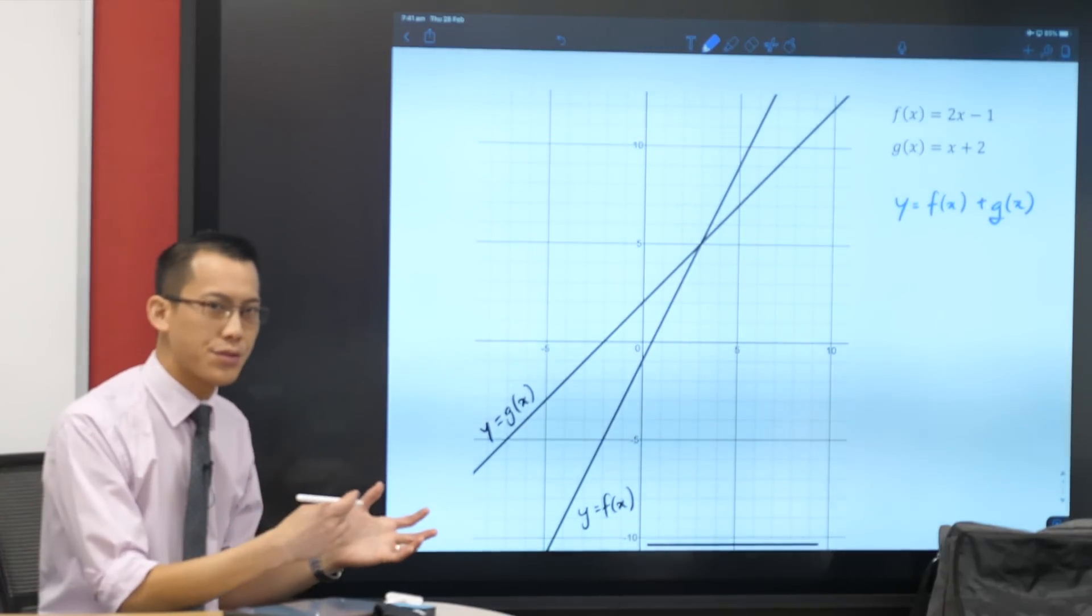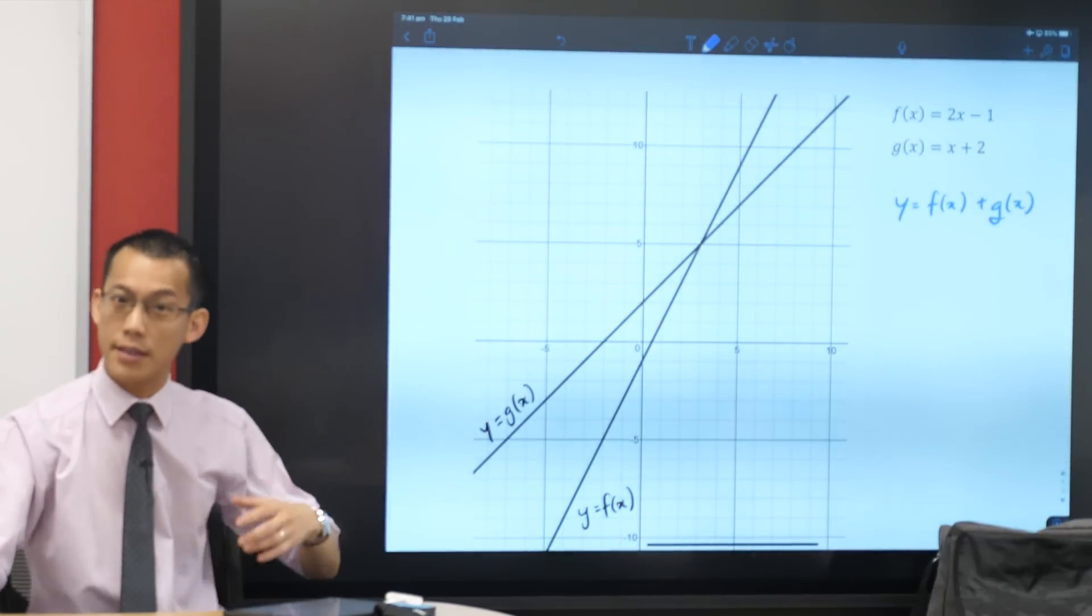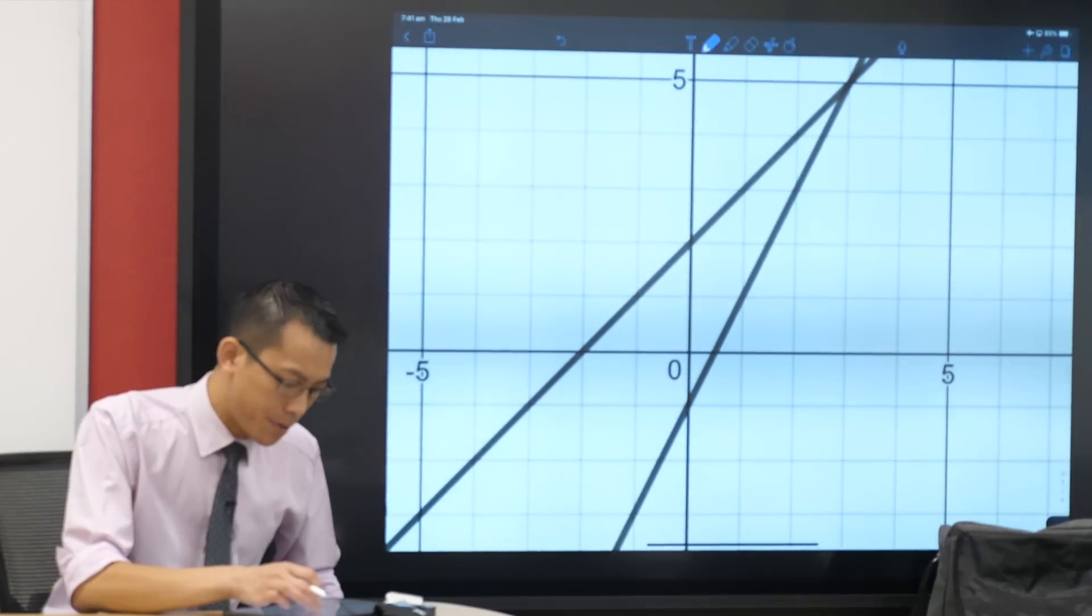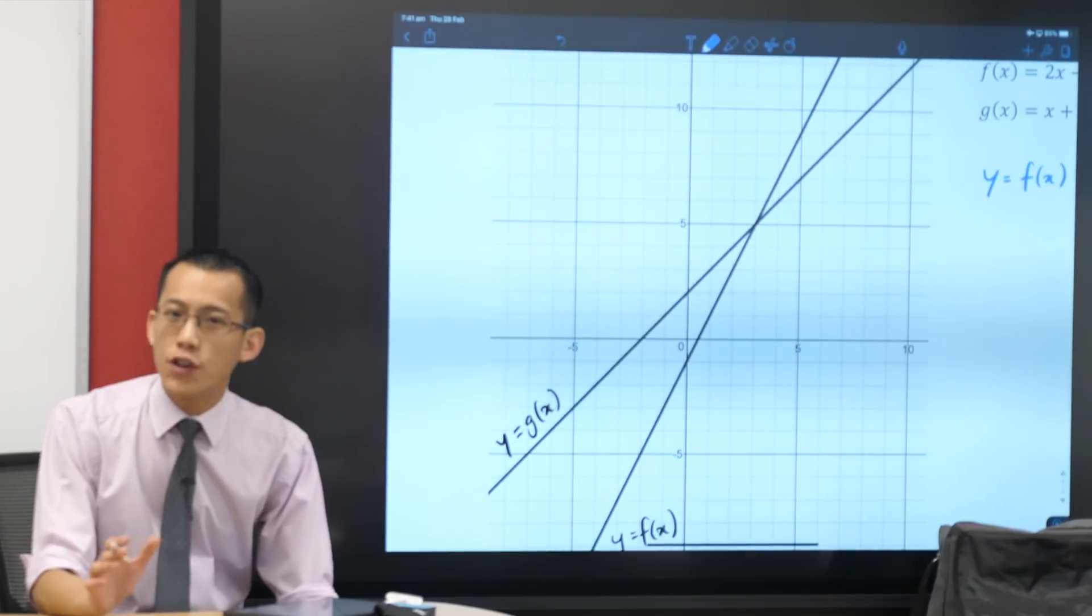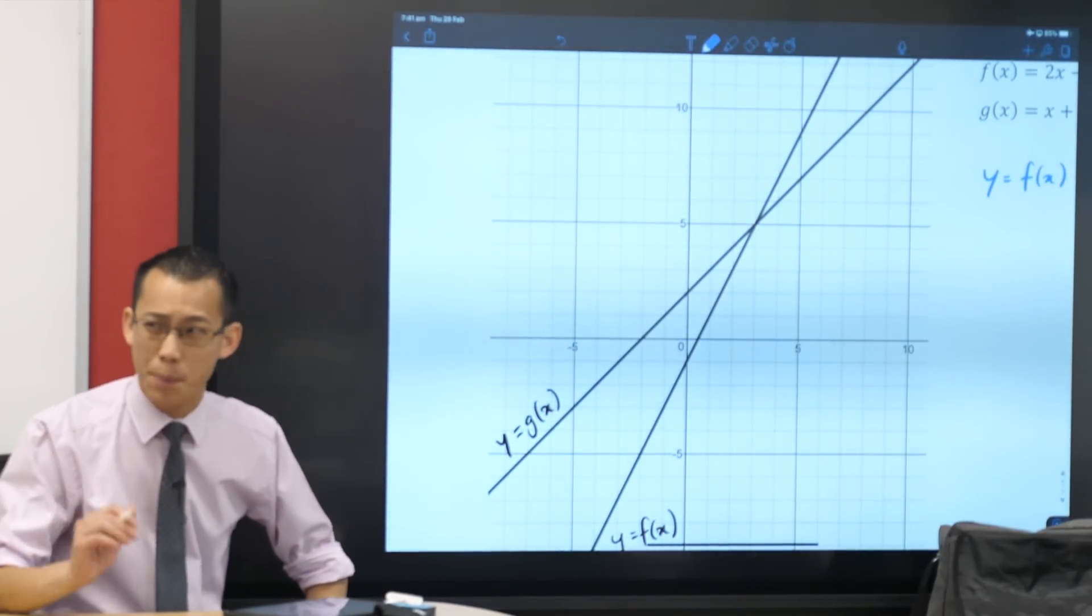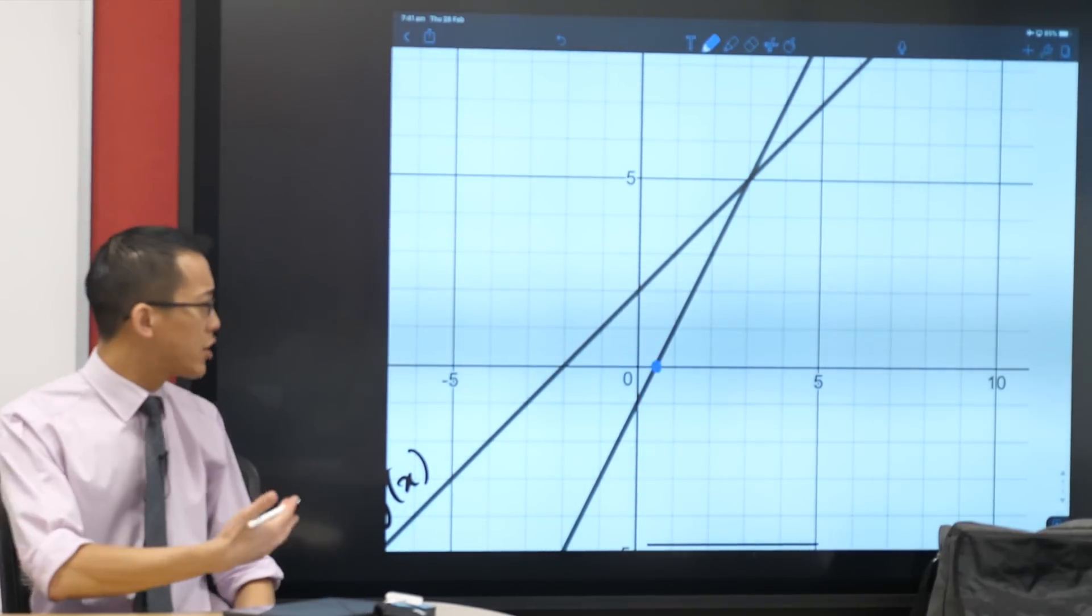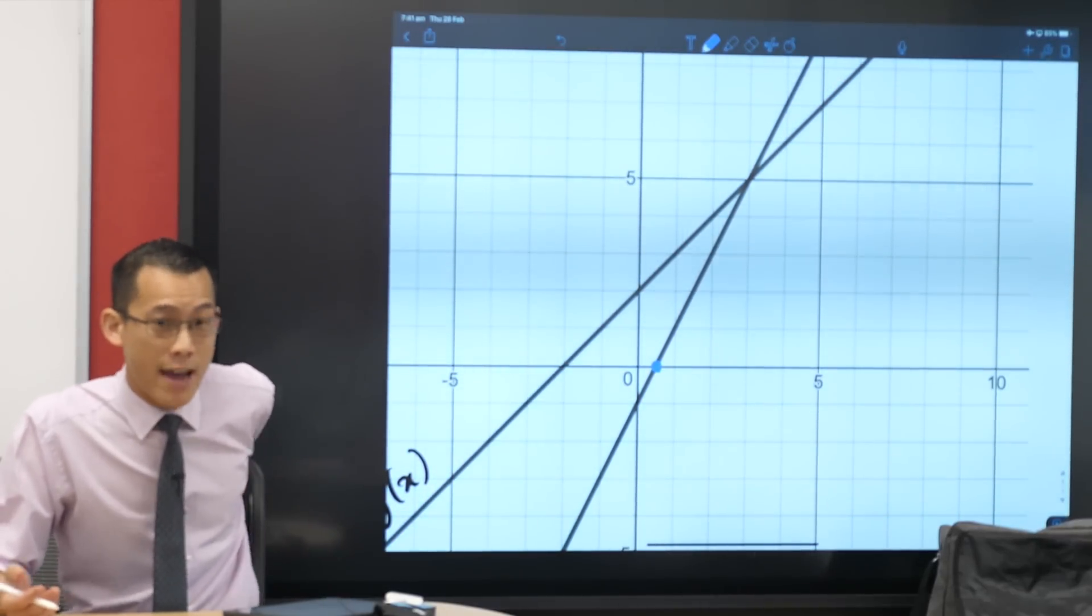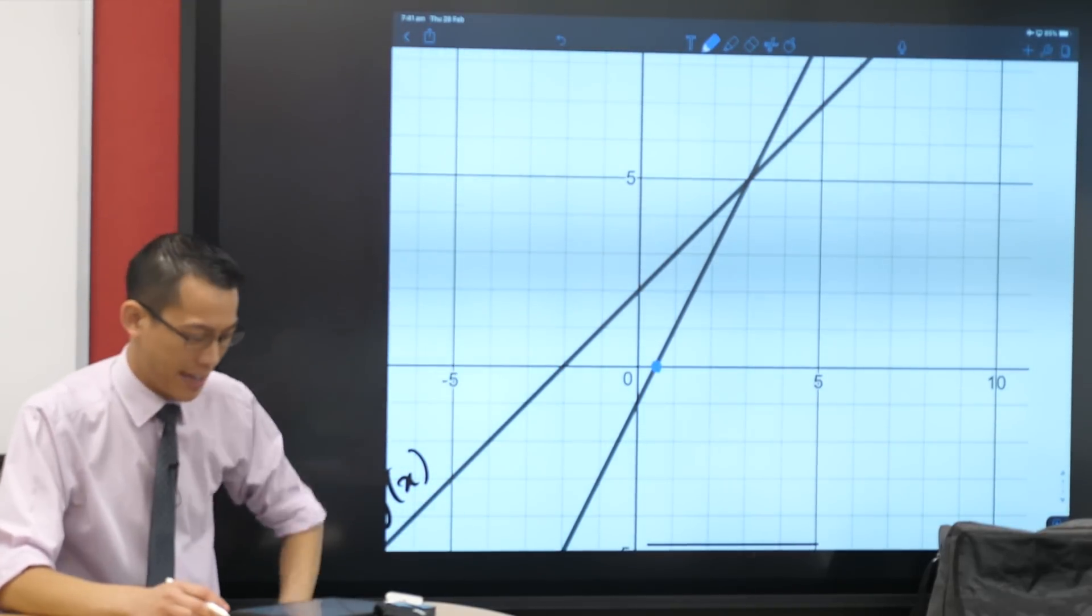But what I want to push your mind into thinking about is what if you didn't know? What if you put them together algebraically, like, I don't know what this looks like. Can we use these graphs to help us? And the answer is yes. So here's what f and g look like. How can I use the graphs to work out what the sum of these two will look like?